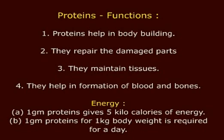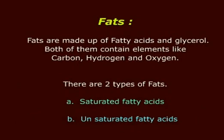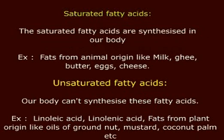Fats are made up of fatty acids and glycerol, both containing elements like carbon, hydrogen, and oxygen. There are two types of fats: saturated fatty acids and unsaturated fatty acids. Saturated fatty acids are synthesized in our body; examples include fats from animal origin.